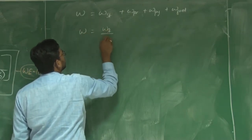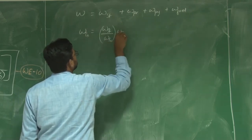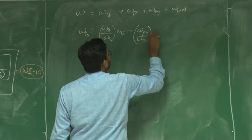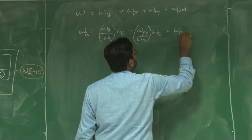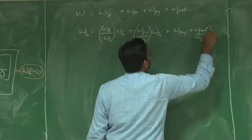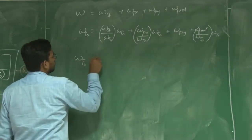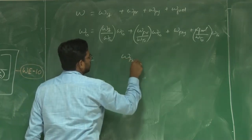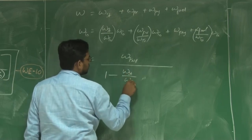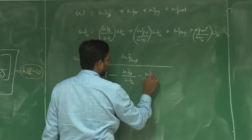We express this total weight or takeoff weight as a weight fraction: structural weight fraction plus propulsion weight fraction plus payload plus fuel weight fraction. The takeoff weight W_takeoff is obtained by rearranging this equation, where the denominator contains all the weight fractions.